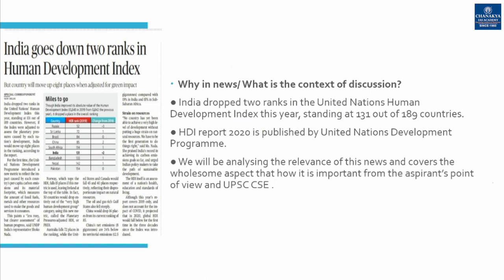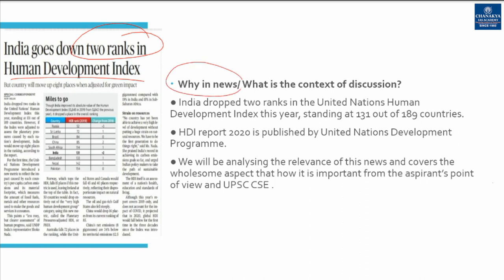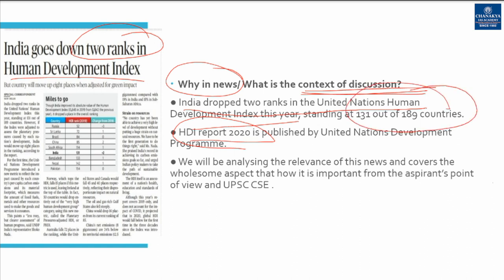The news is that India goes down two ranks in the Human Development Index. We would be discussing why it is in news and what is the context. Very recently, UNDP has published the Human Development Index report and India dropped two ranks, getting 131st rank out of 189 countries.